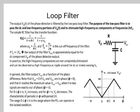Loop filter. The output V_phi(t) of the phase detector is filtered by the low-pass filter. The purpose of this low-pass filter is to pass the DC and low-frequency portions of V_phi(t) and to attenuate high-frequency AC components at frequencies 2π·FIN. The simple RC filter has a transfer function F(s) = 1 / (1 + sRC) = 1 / (1 + s/ωP), where ωP = 1/RC and fP = ωP / 2π is the cutoff frequency of the filter. If fP is less than 2·FIN, then the output of the filter V_out is approximately equal to the DC component V_phi of the phase detector output. In practice, high-frequency components are not completely eliminated and can be observed as high-frequency AC ripple around the DC value.